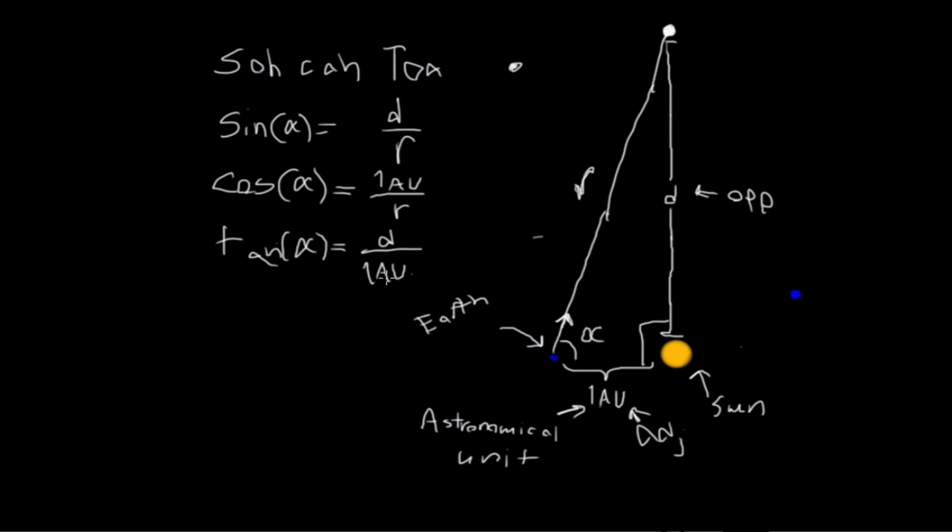So just with a little bit of algebraic manipulation, one, I'm just going to write down the unit so we're clear, times the tangent of our angle alpha is equal to the distance between our sun and that star.